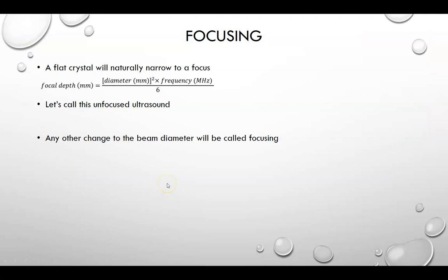Let's talk about focusing. Everything discussed so far about beam shapes has been about a flat crystal. An unfocused crystal has a natural focal length. A flat crystal naturally focuses at a focal depth equal to the diameter of the crystal times the frequency, divided by six. We generally call this unfocused ultrasound.